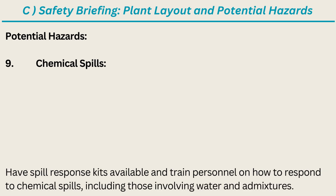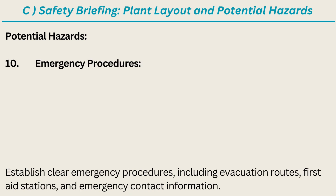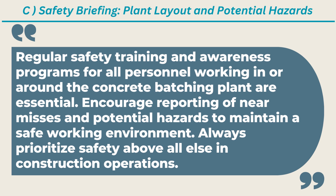9. Chemical Spills — have spill response kits available and train personnel on how to respond to chemical spills, including those involving water and admixtures. 10. Emergency Procedures — establish clear emergency procedures, including evacuation routes, first aid stations, and emergency contact information. Regular safety training and awareness programs for all personnel working in or around the concrete batching plant are essential. Encourage reporting of near misses and potential hazards to maintain a safe working environment. Always prioritize safety above all else in construction operations.